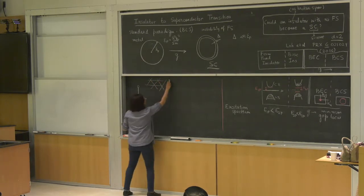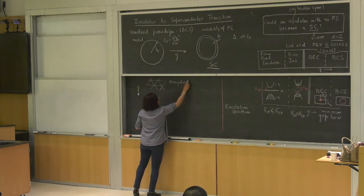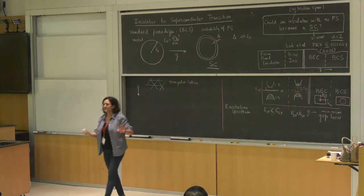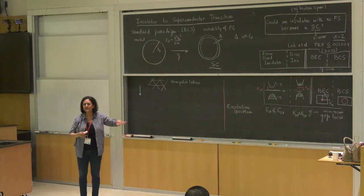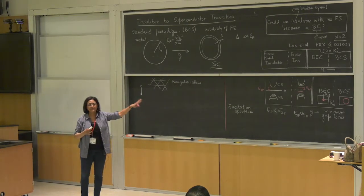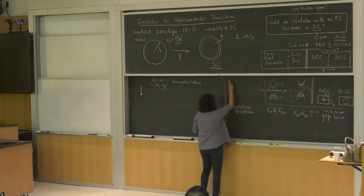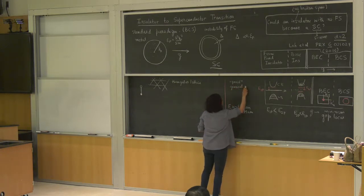I make a triangular lattice. Why triangular? Because I don't want any other broken symmetries like a CDW instability. But as I said, none of these things are really critical — ultimately it's a very general result we are getting. At the level of physicists, we might even call this like a proof, but let me just say it's a very general scenario.